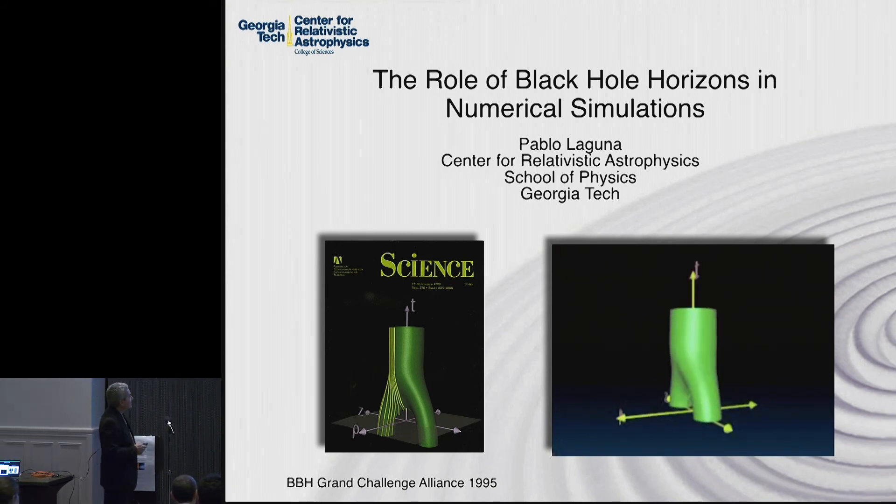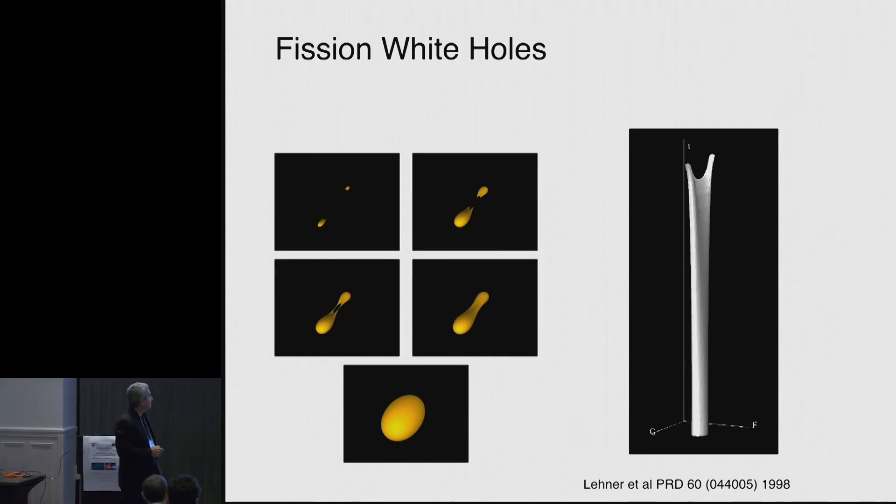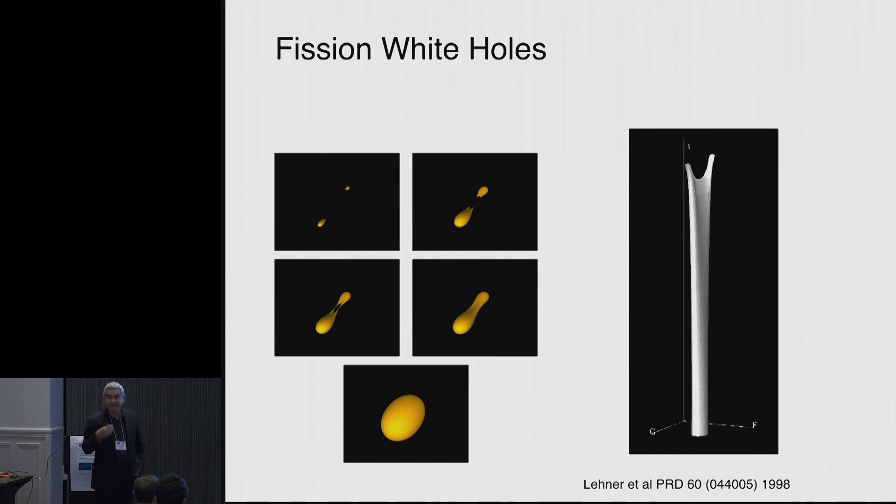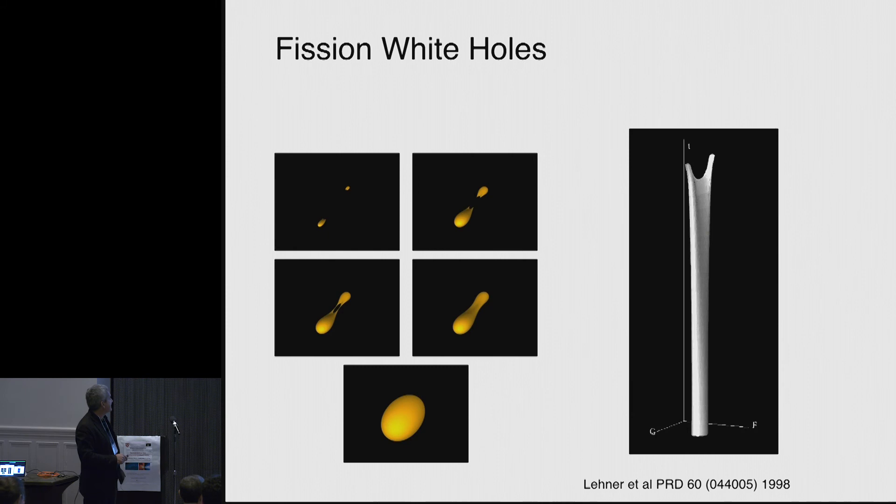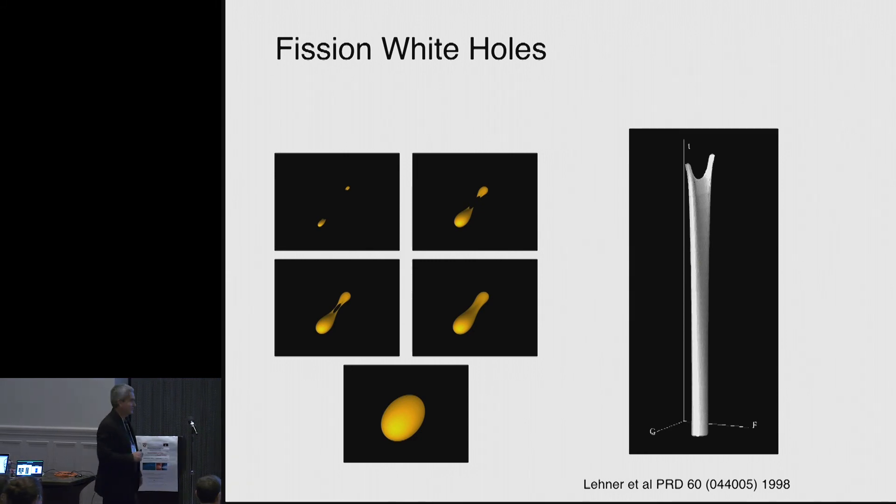So there were other results connected with black holes. For instance the group in Potsdam at that time, what they did is they again did a simulation back in time of these white holes. And what you see here are snapshots. This runs back in time. The simulation went this way where you have two horizons, then they actually merge when they go back in time. But of course moving forward in time you see the white holes actually splitting.